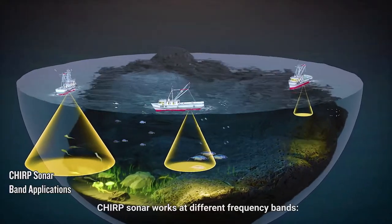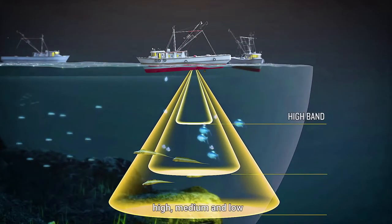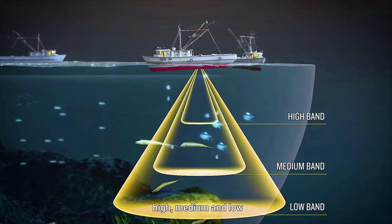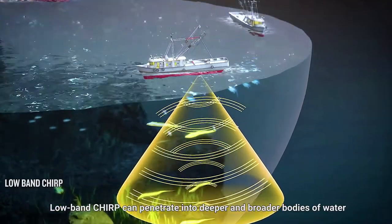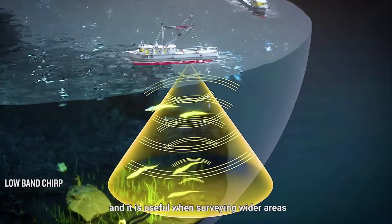Chirp sonar works at different frequency bands – high, medium and low. Low-band Chirp can penetrate into deeper and broader bodies of water, and it is useful when surveying wider areas.